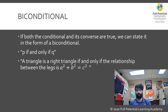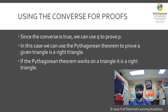Since the converse of the Pythagorean theorem is true, we can use it when solving proofs. When you see that the sum of the square of each leg is equal to the square of the hypotenuse, we can therefore conclude that the given triangle is a right triangle.